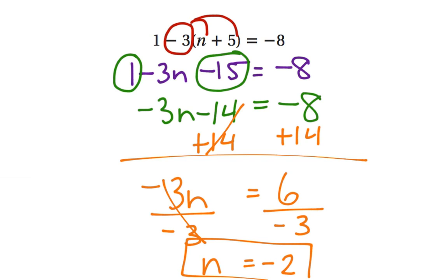To check our work, we plug it back into the original equation: 1 minus 3 times negative 2 plus 5. Order of operations says brackets first: 1 minus 3 times 3.